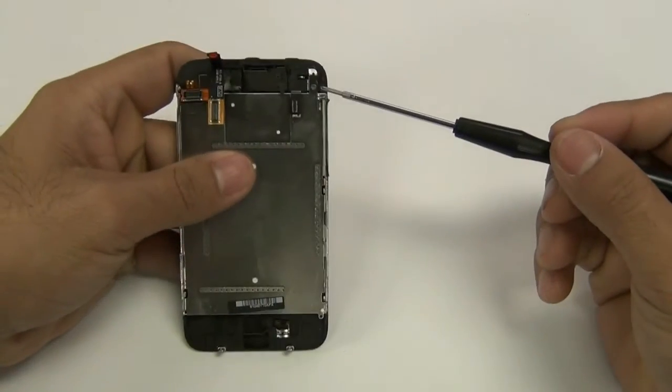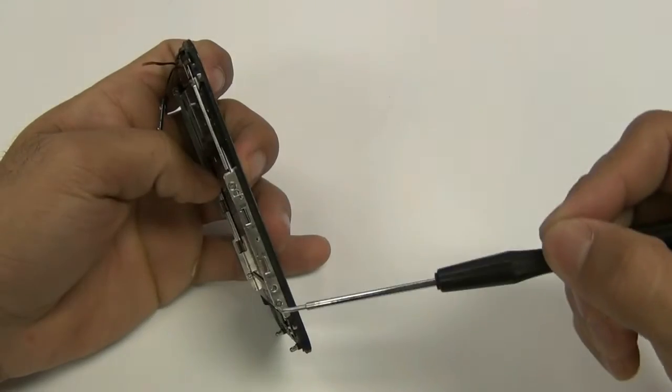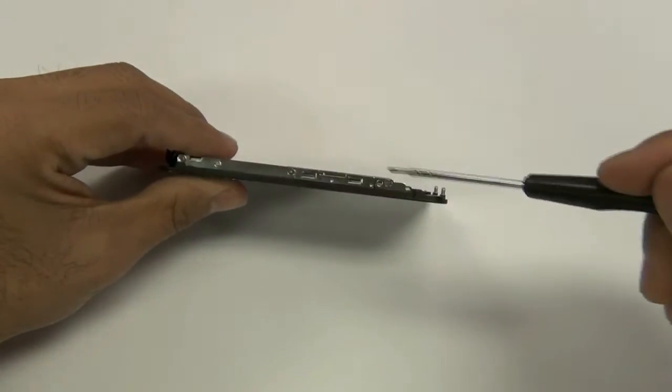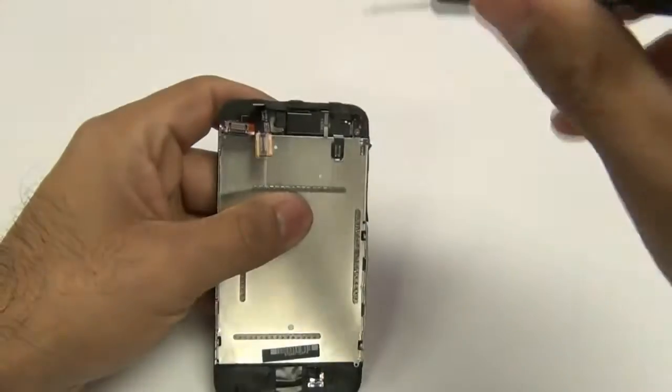With your touchscreen LCD assembly separated, remove six screws on the metal back plate: one on the top, two on one side, and three on the other side.